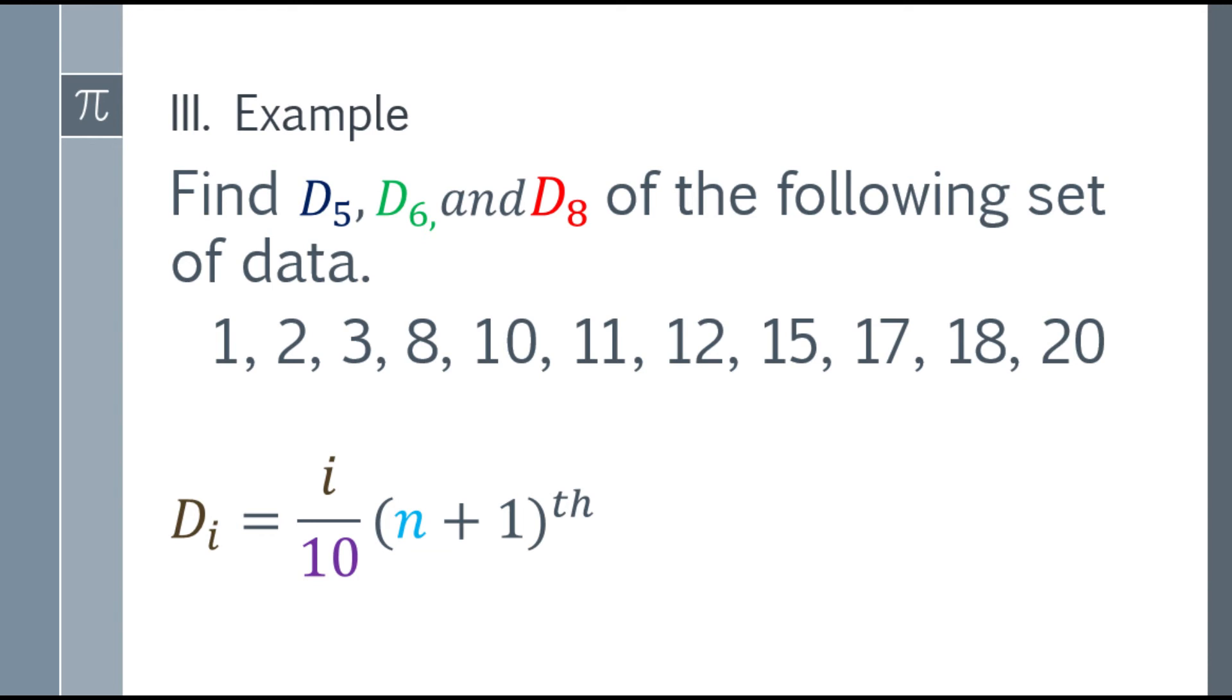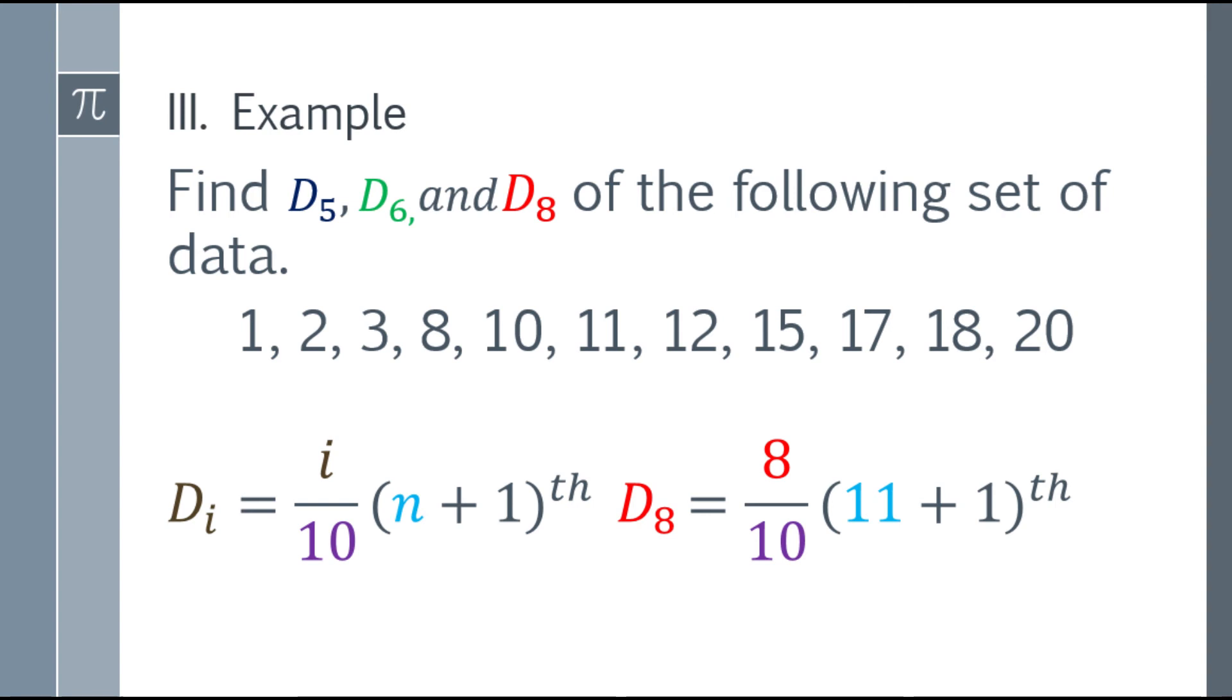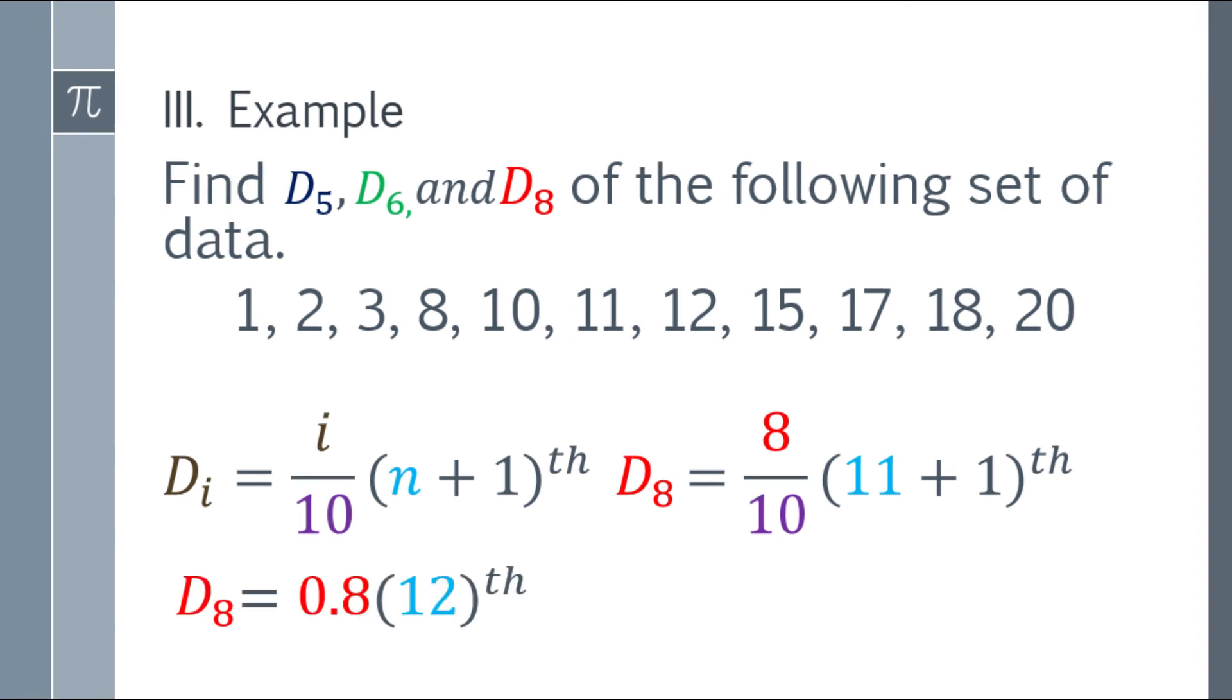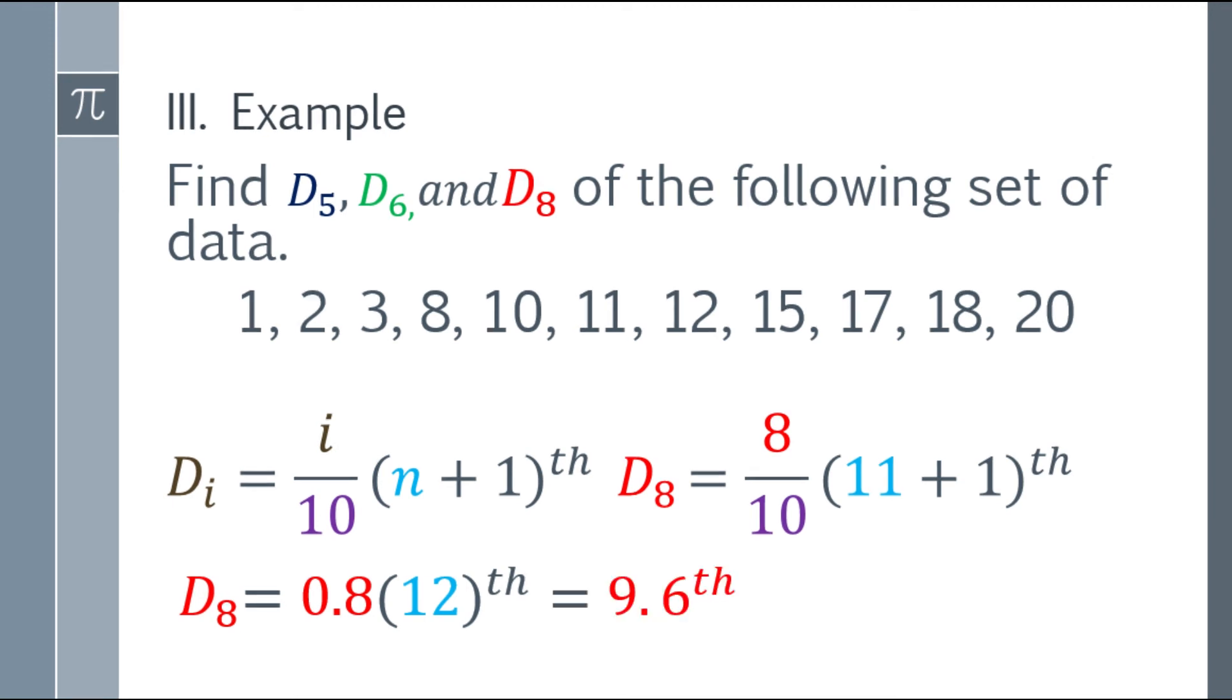Moving on, let's have the last one, the 8th decile. So, write the formula. Now, we have to substitute the values. So, simplify it. So, 8 over 10, that will be 0.8. And inside the parentheses, that will be 12. 12 times 0.8, that will be 9.6.